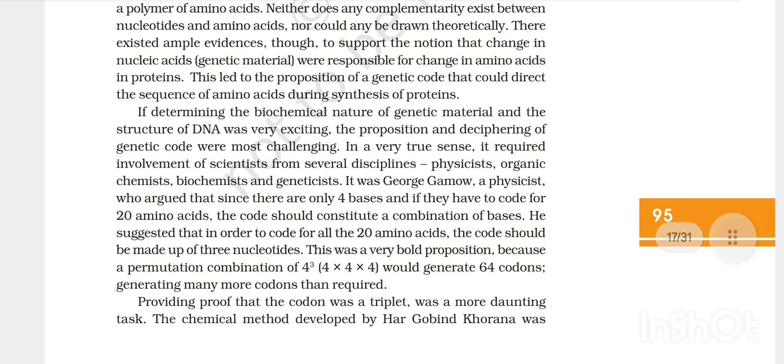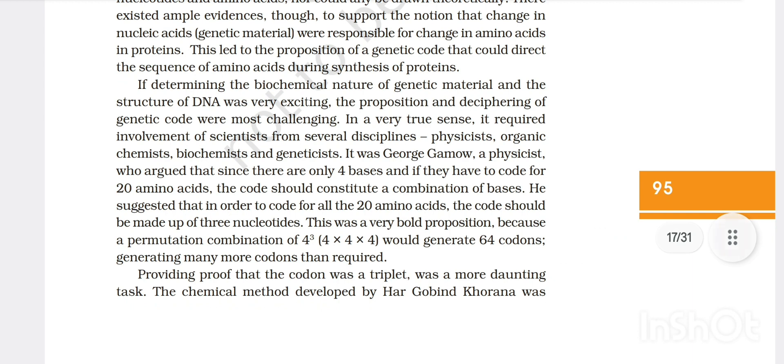The process of translation requires transfer of genetic information from a polymer of nucleotides to synthesize a polymer of amino acids. Neither does any complementarity exist between nucleotides and amino acids nor could any be drawn theoretically. There existed ample evidence through the support of notion that changes in nucleic acid or genetic material were responsible for changes in amino acids in protein. This led to proposition of a genetic code that could direct the sequence of amino acids during synthesis of protein. If determining the biochemical nature of genetic material and the structure of DNA was very exciting, the proposition and deciphering the genetic code were most challenging. It required involvement of scientists from several disciplines - physicists, organic chemists, geneticists.